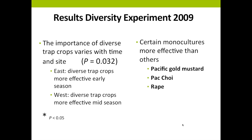The results of our diversity experiment from 2009 showed us a few important things. First, we found that diverse trap crops were important, but it depended on the season. Diverse trap crops were more effective early in the season at our east location; at our west location, they were more effective mid-season. More importantly, we found that certain monocultures were more effective than others — those that attracted more flea beetles included monocultures of Pacific Gold Mustard, bok choy, and rape.